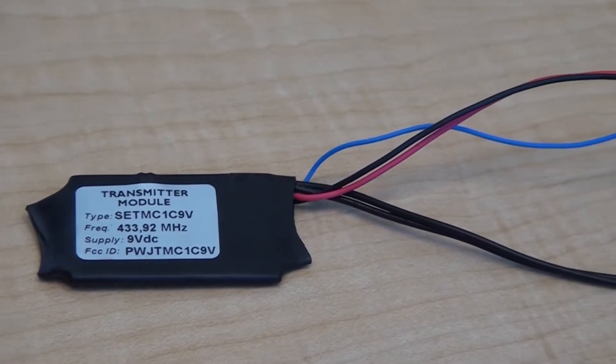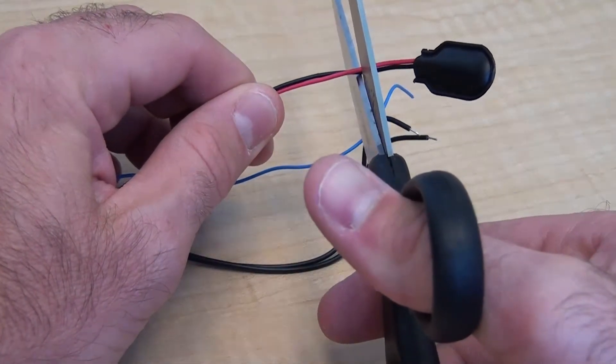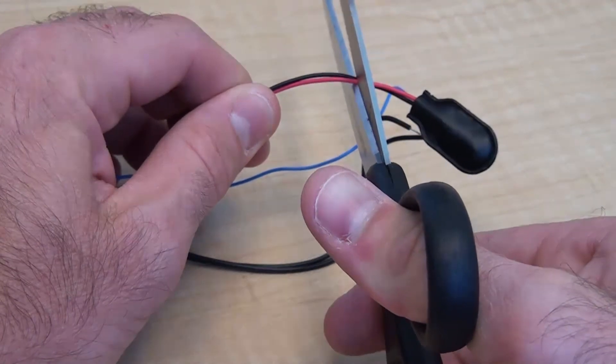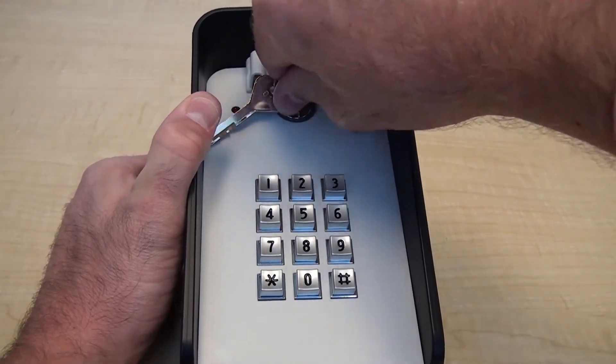To prepare the 433 module for use in the keypad, first cut the 9-volt red and black wires near the battery connector. Open the keypad using the keys included.